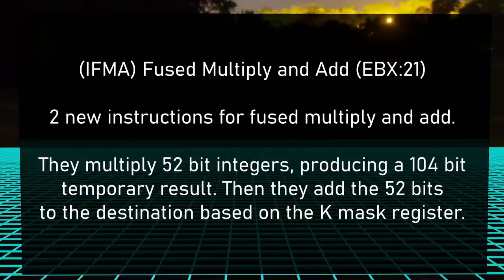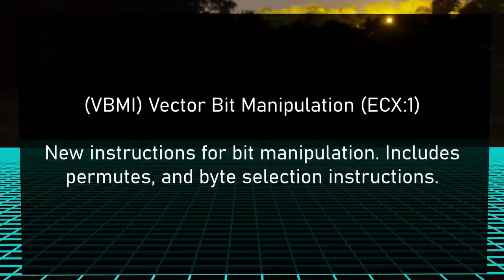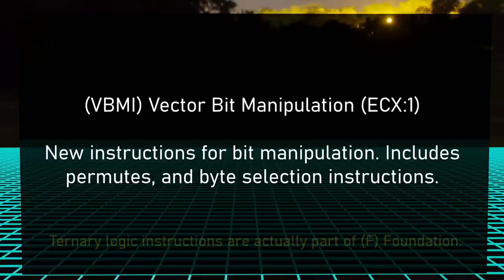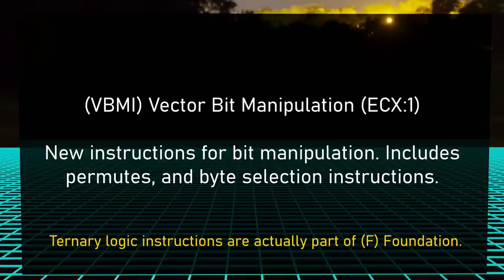Then we've got Fused Multiply and Add. These have become some of the most useful instructions out there — they are number-crunching fiends. CPU ID flag EBX bit 21. Moving along, VBMI: Vector Bit Manipulation Instructions. There are some very, very powerful bit manipulation operations in this instruction set — just next level. Ternary logic, anyone? CPU ID flag ECX bit 1.